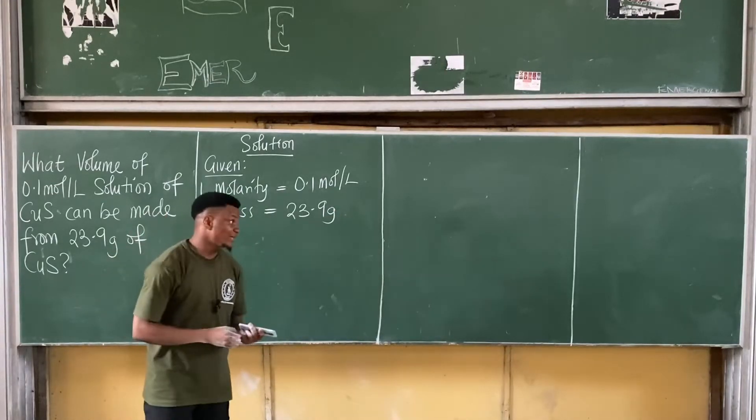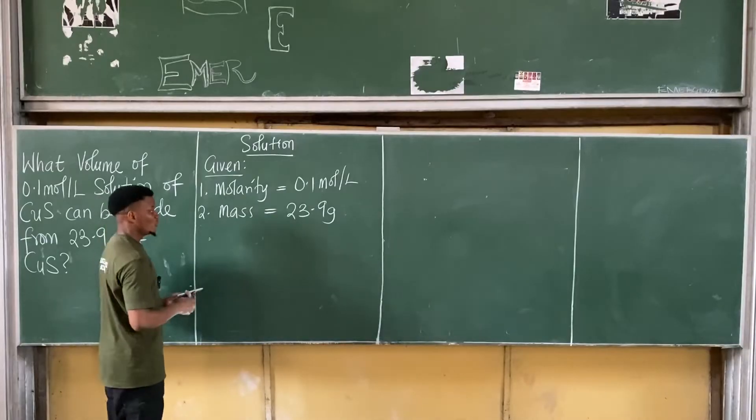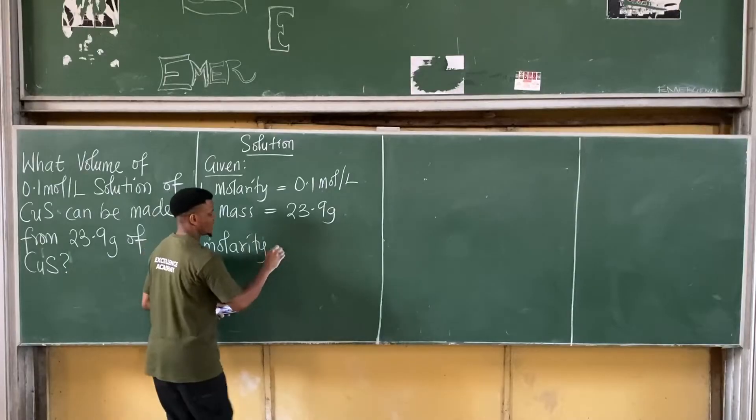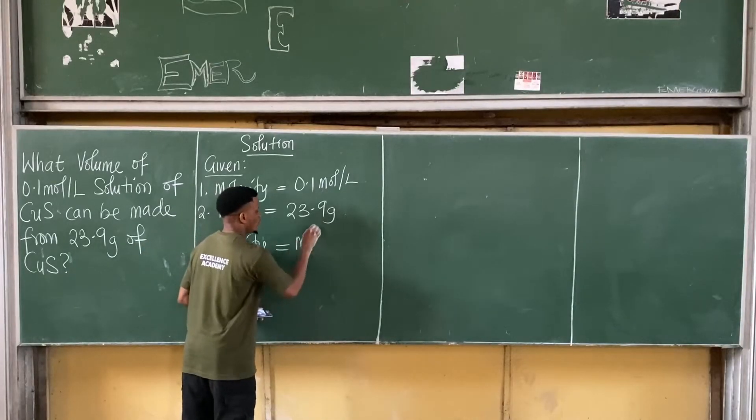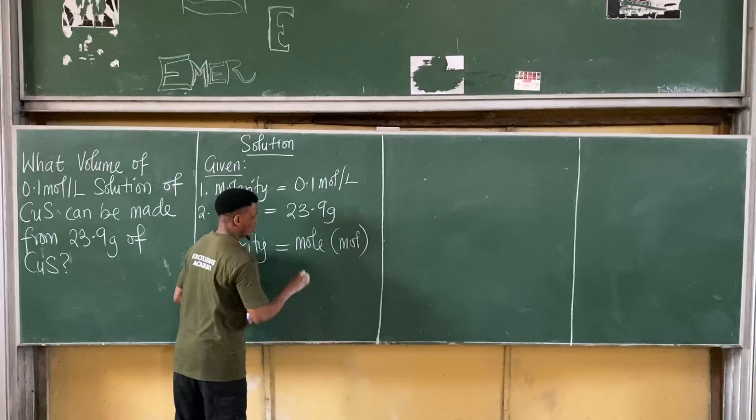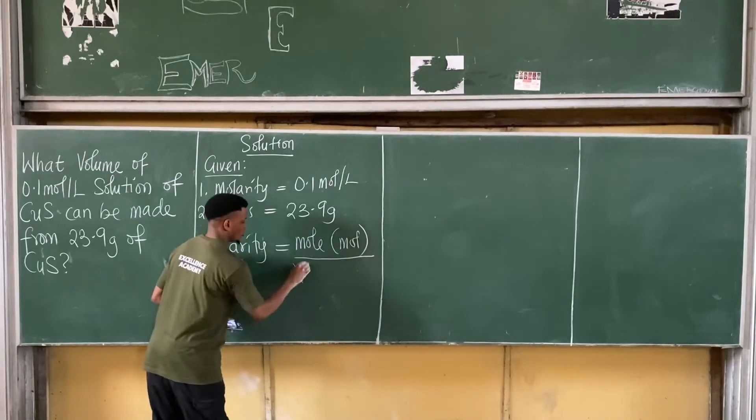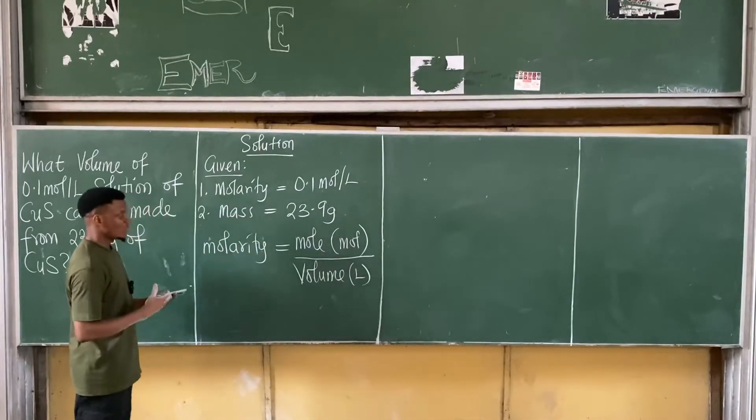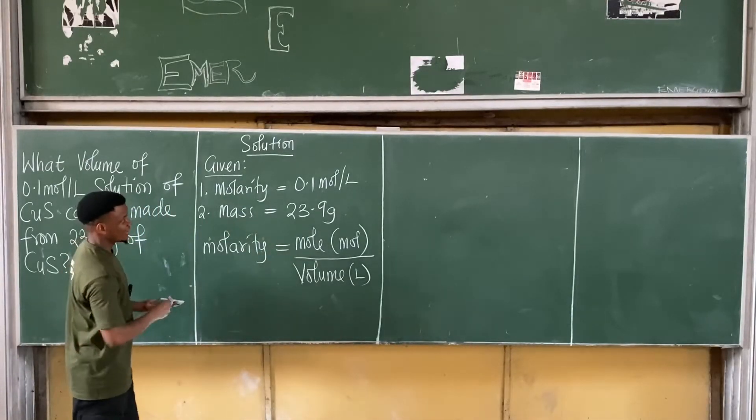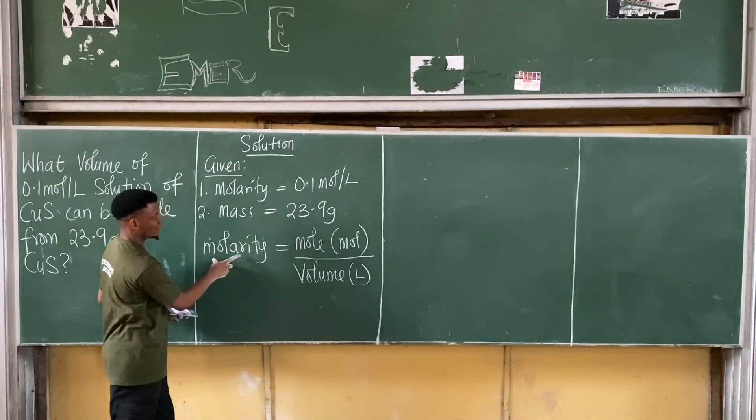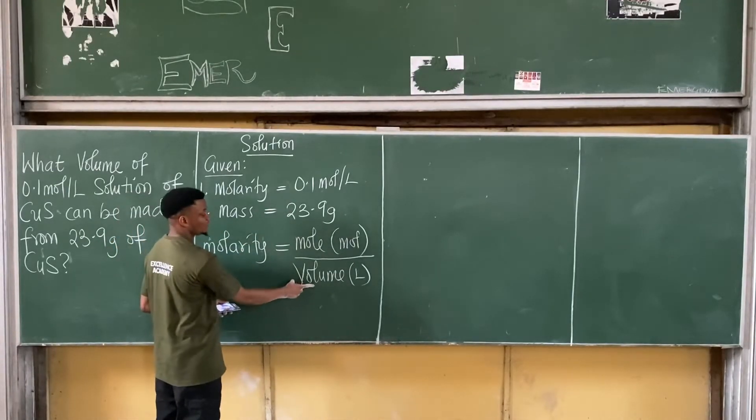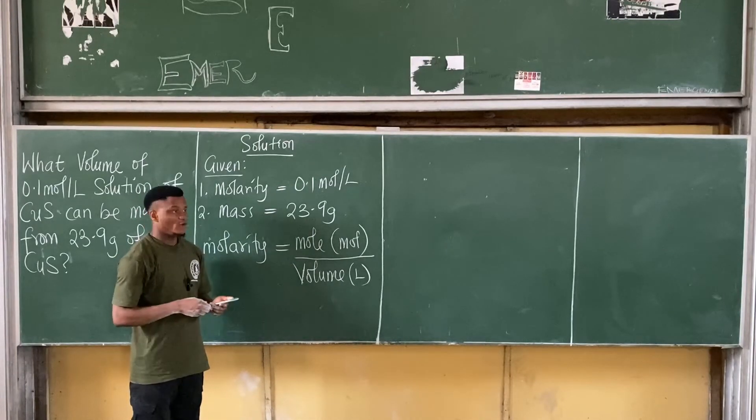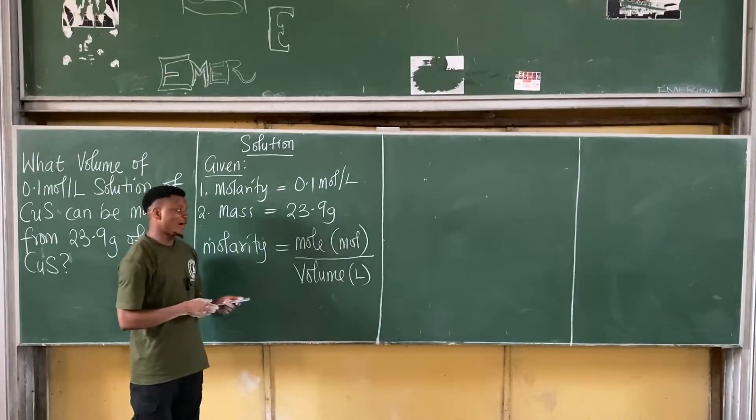In this case, we're asked to find the volume. And what we know is that molarity is equal to mol, that's in M-O-L, all over volume in liter. So I have this. Molarity itself is 0.1, so I have the value for this. I'm asked to find volume. If only I have the value for the mole, I can now solve this. Of course, I don't have the value for the mole. I'll have to calculate mole.